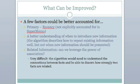So, what can be improved? A few factors could better be accounted for. The primary recency effect might be able to be taken into account when looking at the SuperMemo or similar algorithms. Also, a better understanding of when to introduce new information as opposed to when to rehearse old information might be useful. One of the most fascinating possibilities is the idea of using related information — could we leverage the power of activation and association? It's a very difficult computer science problem because the algorithm would need to understand the connections between two facts, such as that two colors are conceptually very similar, whereas a train and a boat are somewhat similar. But if we could leverage this, it might be a very useful technique.